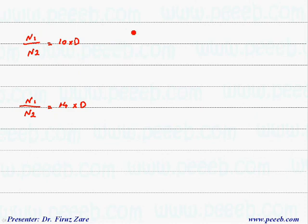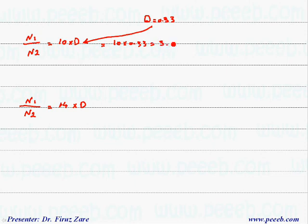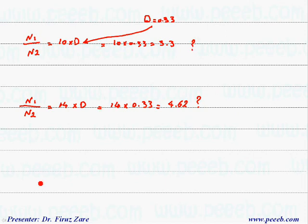The maximum duty cycle is approximately 0.33, so we can find the turns ratios. 10 times 0.33 is 3.3, and 14 times 0.33 is 4.62. The question is which turns ratio is the answer. We need to look at the condition, find the turns ratio, and then solve the system to find the duty cycle.